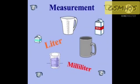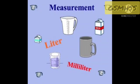What does Valium and Capacity mean? Valium is the physical property of substance. Valium is the space taken up by an object, and Capacity is the amount that a container can hold.